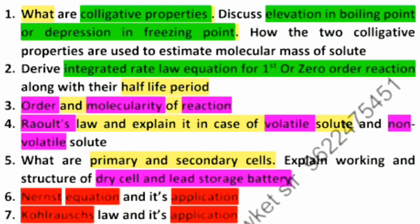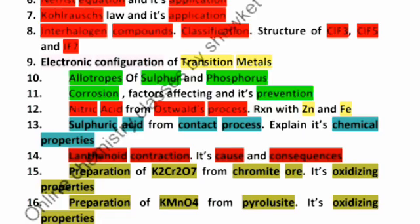Next is the Nernst equation and its application, and Kohlrausch's law and its application to calculate the molar conductivity for weak electrolyte, and the equilibrium constant and the degree of dissociation. It's very important in Kohlrausch's law.